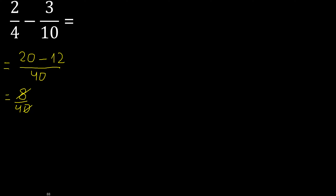Can be simplified because it can be divided by the same number. Divided by 2: 8 divided by 2 is 4, 40 divided by 2 is 20. Can be divided by 2 again, divided by 2, divided by 2 — can be divided by 2.